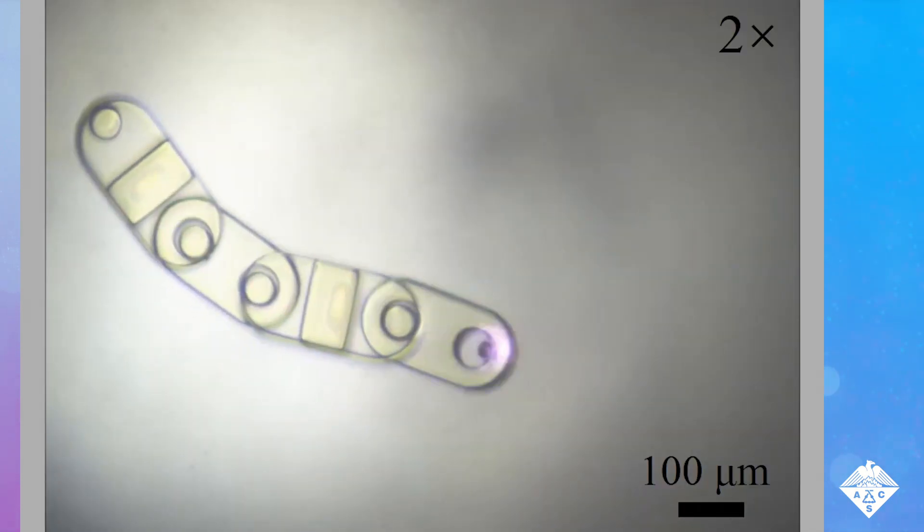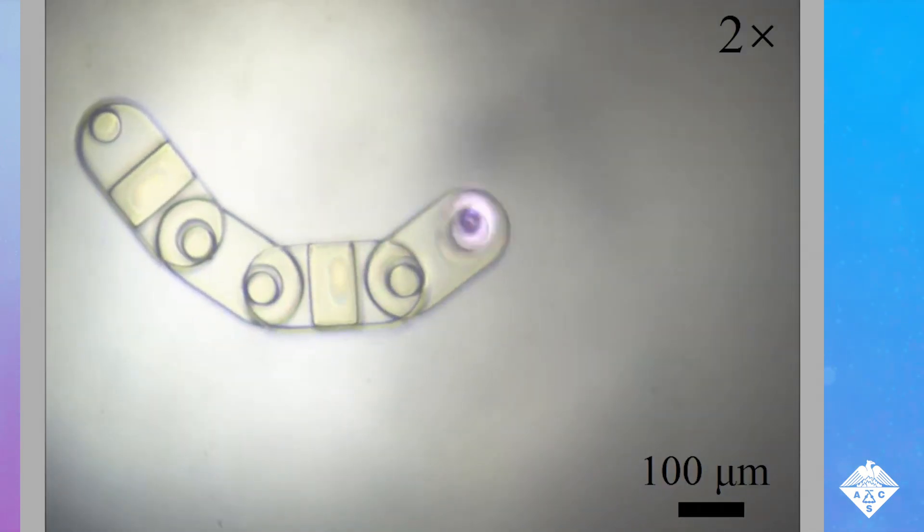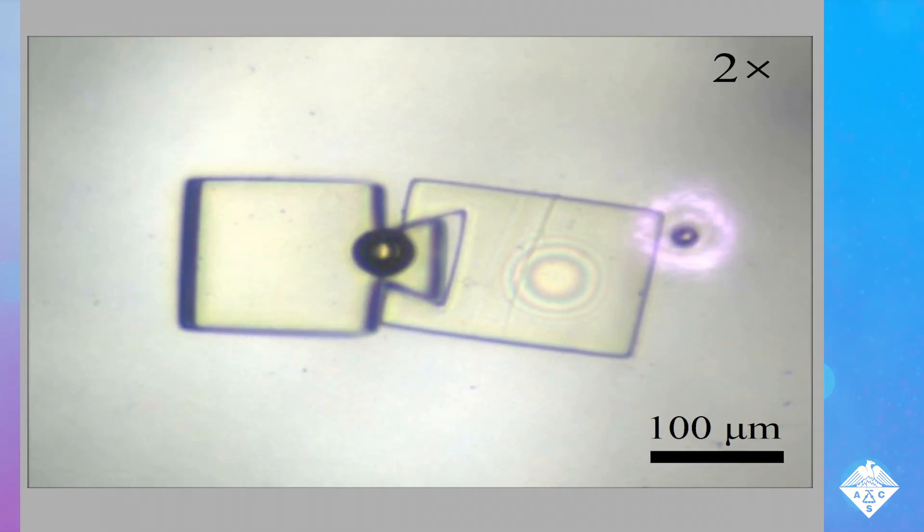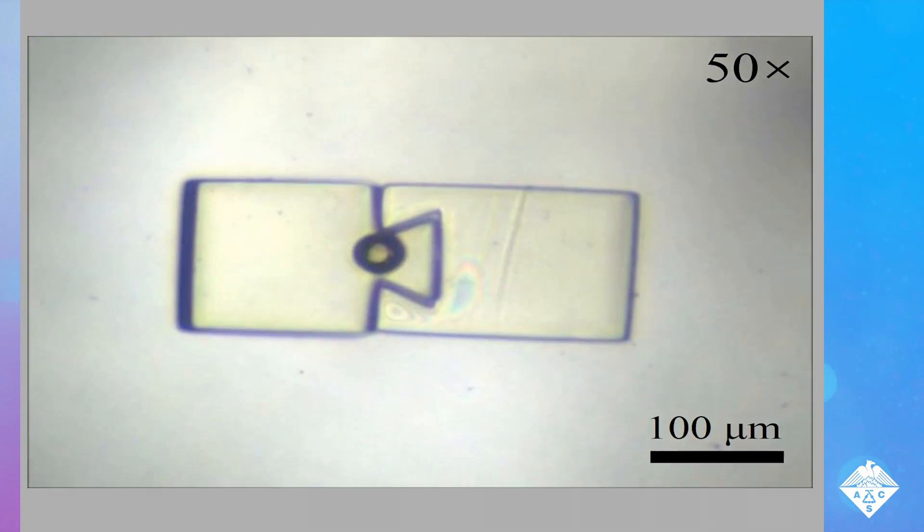By shifting the laser's location, the researchers made a mobile robot. The bubble micro-robots can lift and drop parts, move single pieces to designated positions, and connect components.